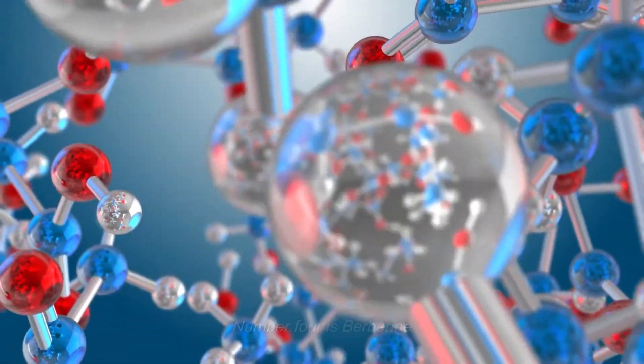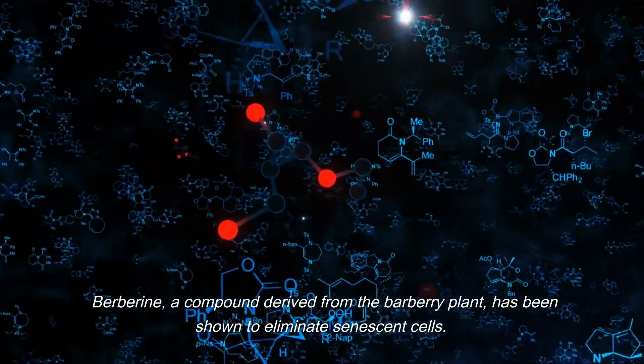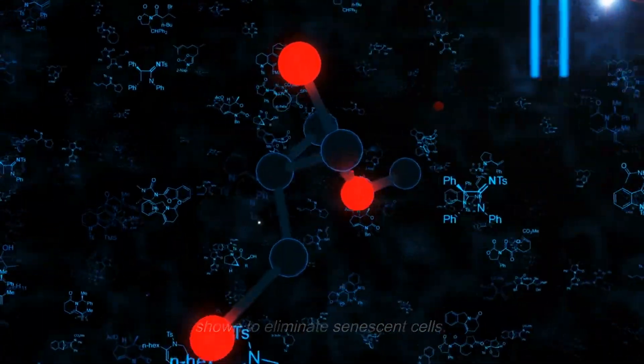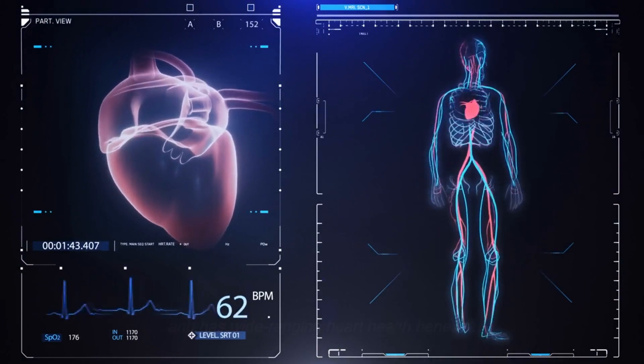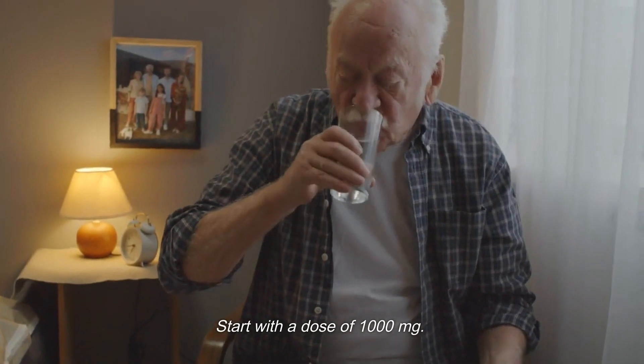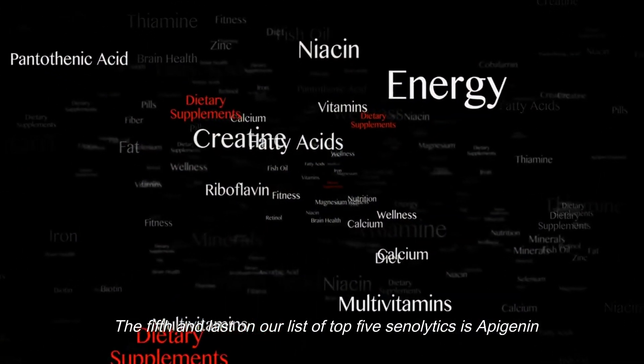Number 4 is berberine. Berberine, a compound derived from the barberry plant, has been shown to eliminate senescent cells. It also promotes tissue rejuvenation and has wide-ranging heart health benefits. Start with a dose of 1,000 mg.